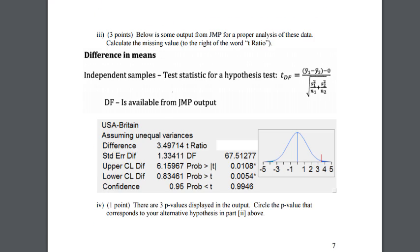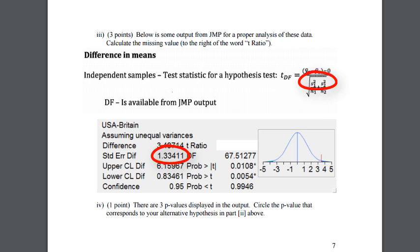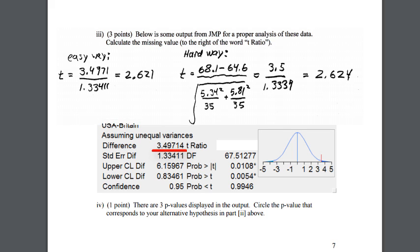For the t-ratio, remember the equation: take the difference between the two means and divide by the standard error of the difference. The JMP output gives you that directly. You can also plug in each number individually as an algebra problem. Either way, make sure to write down the notation from the start and double-check your work carefully.